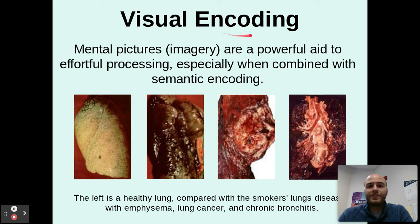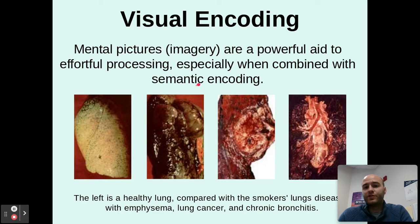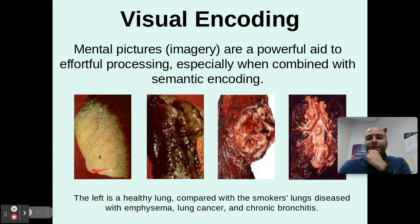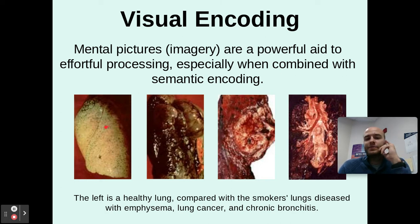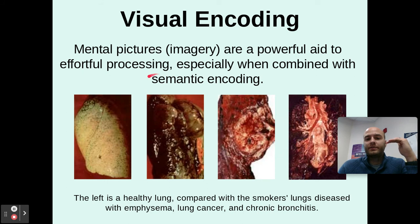Another aspect of encoding: visual encoding is very beneficial for us. Mental pictures are a powerful aid to effortful processing, especially when combined with semantic encoding — the meaning and actual information behind terms you're trying to learn. When you combine semantic meaning with visual encoding or mental pictures, it helps things stay in your long-term memory. For example, if I just told you about the difference between a normal lung and one with emphysema, lung cancer, or bronchitis, you'd kind of get it. But when I add pictures showing a healthy lung compared to a smoker's lung, you understand the actual visual impact behind the semantic meaning, and it makes it stick much better.